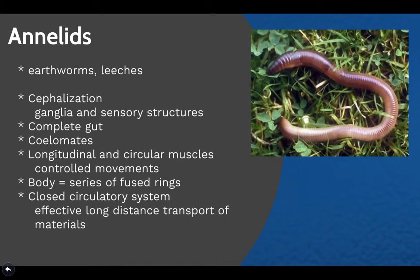The next clade is Annelida, composed of earthworms and leeches. There is still cephalization occurring here, with ganglia and sensory structures developing. There is a complete gut, and these organisms are coelomates. They have longitudinal and circular muscles that allow them to control movement. Their bodies have very distinct fused rings, and they have a closed circulatory system, which allows for effective long-distance transport of materials.